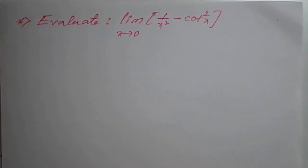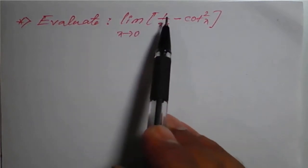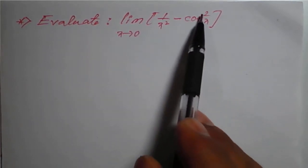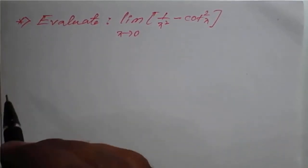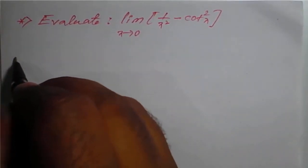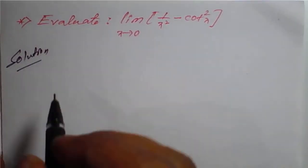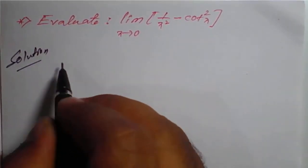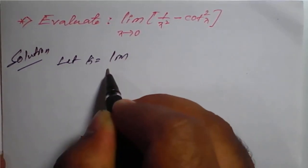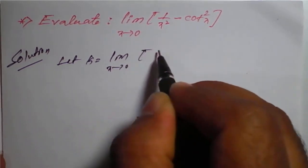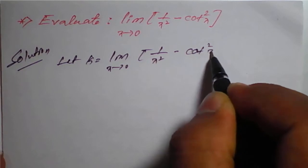Hello everyone. In this lecture, we will see a problem on evaluating the limit 1 upon x square minus 1 upon tan square x as x tends to 0. We will see the solution of this limit.